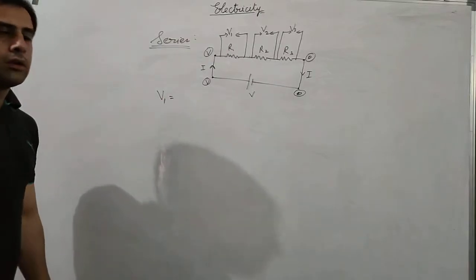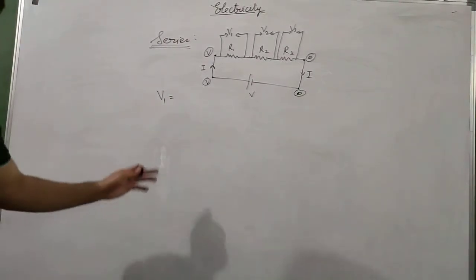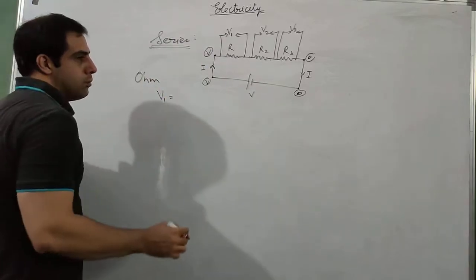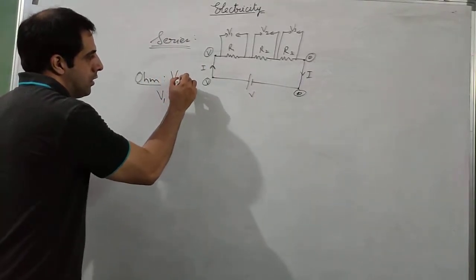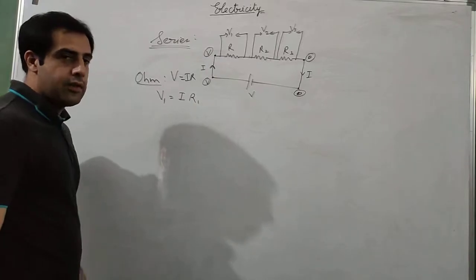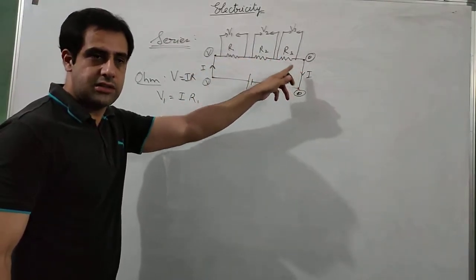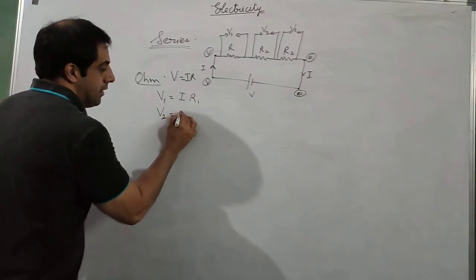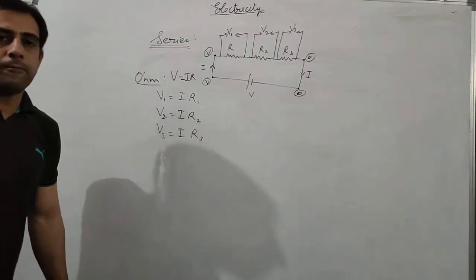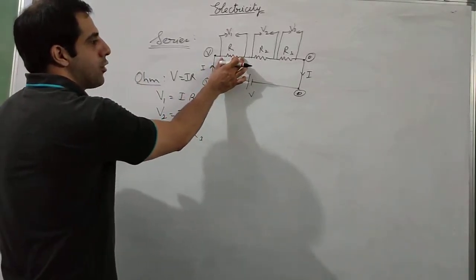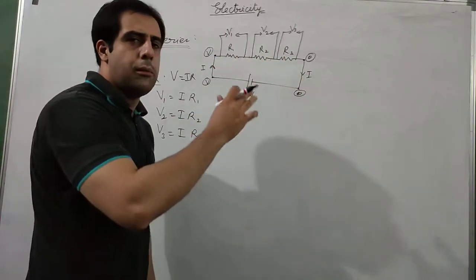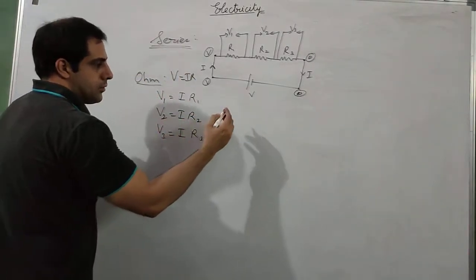If we are asked to find the values of different potential drops across the resistors, we apply Ohm's law: V equals IR. So V1 equals IR1, because the current I is the same for all three resistors. Similarly, V2 equals IR2 and V3 equals IR3. This gives us the individual potential drops across R1, R2, and R3.